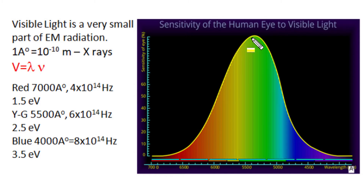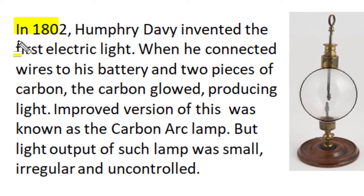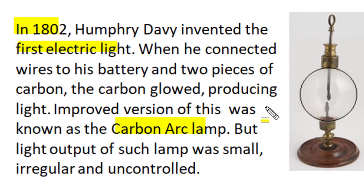In the beginning of the 18th century, in 1801, Volta developed the first chemical voltaic cell with zinc and copper electrodes and dilute sulfuric acid as electrolyte. Humphrey Davy used that voltaic cell to invent the first electric light by connecting two carbon pieces with a small gap, producing a glow through electric discharge. These improved lamps were known as carbon arc lamps, but their light output was very small, irregular, and uncontrolled.